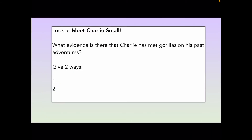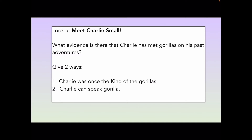Coming back to our question, which asked: what evidence is there that Charlie has met gorillas on his past adventures? The first way we saw in the text was that Charlie was once the king of the gorillas, which must mean — and this is very good evidence — that he has met gorillas in the past. If he was the king, surely he met some gorillas. And another piece of evidence is that Charlie can speak gorilla. If he can speak the language of gorilla, this is very good evidence again that he has met gorillas in the past.